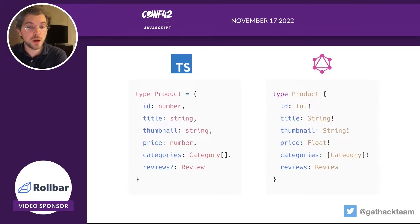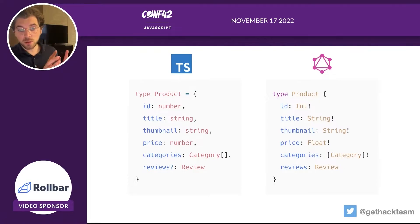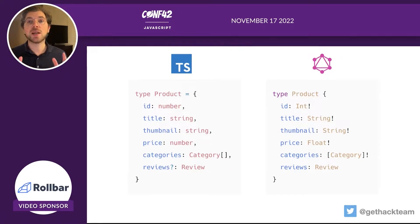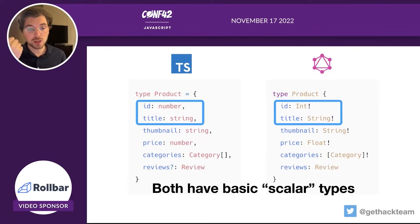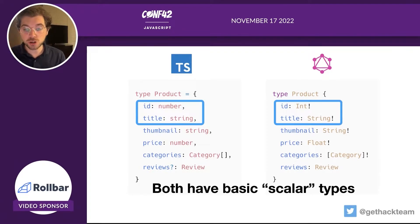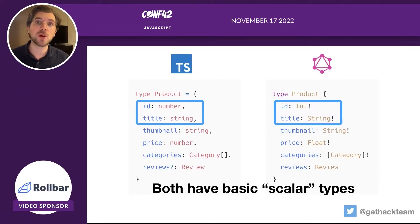If you look on the left side you can see TypeScript and on the right side GraphQL. Both are called 'type Product' and you can see they have id, title, thumbnail, price, categories, and reviews — the same fields for both. Both have basic scalar types: in TypeScript we call these everyday types — things like number and string. In GraphQL we have scalar types: Integer, String, Float. There are multiple ways to define numbers in GraphQL — Integer if you have no decimals, Float if you do, such as a price. In TypeScript everything is just 'number', which can be both an integer or a float.